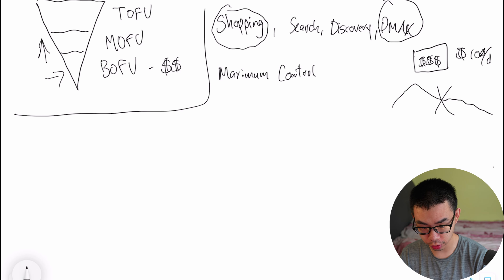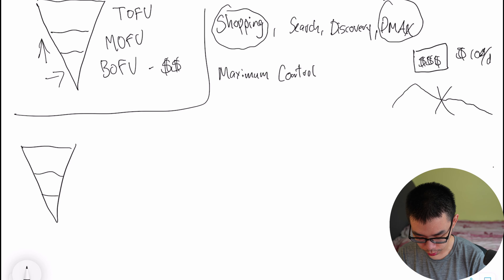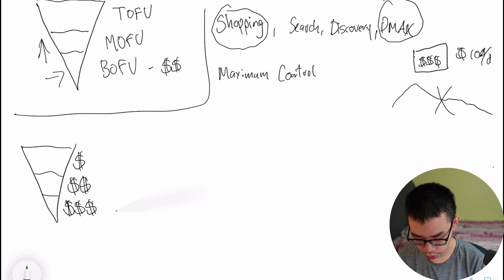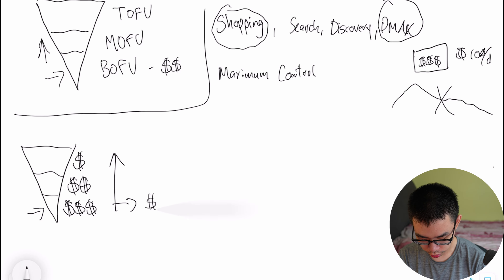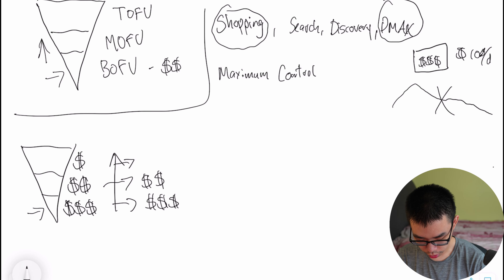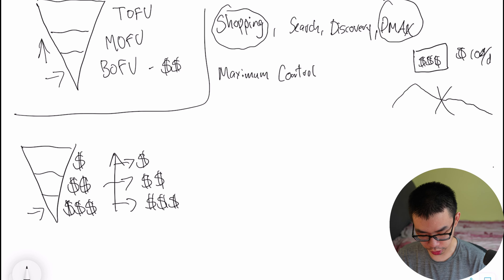Now you understand this is a shopping funnel. We need to understand keyword intent and why we use this funnel. We set it up as ToFu, MoFu, BoFu, spending most of our money at the very bottom of the funnel, a bit less in the middle, and even less at the top. The reason is that spending more at the bottom nets us more revenue right away compared to the top, where we spend the same but get much less return.